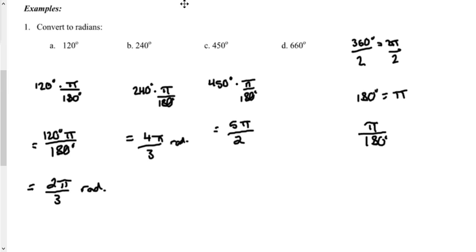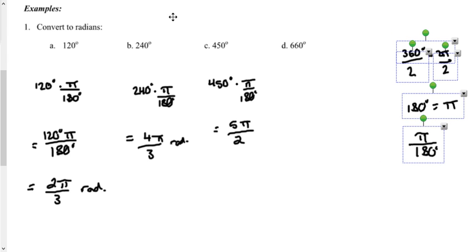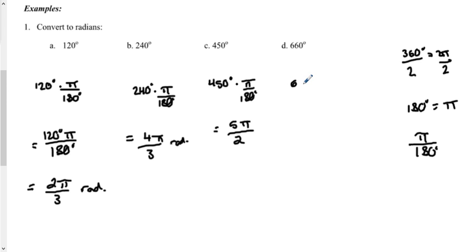And my last example there, 660 degrees. I'll move my conversion factor out of the way here. Again, I would take 660 multiplied by pi over 180. I know that 60 will go into 660 eleven times, so I'd have 11 pi over 3 for 660 degrees.